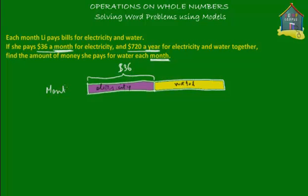Let's write down that this is the monthly bill. For electricity she pays $36, so this purple block is equal to $36. We don't know how much she pays for water, and this is what we have to find out.